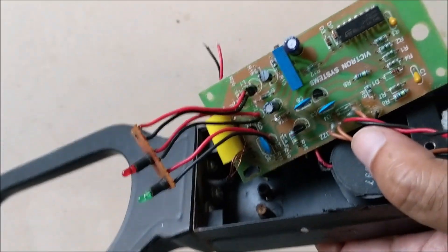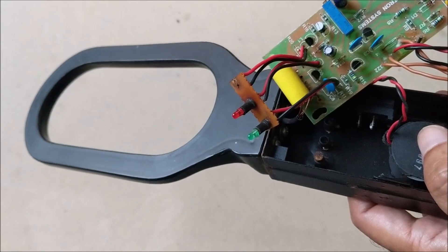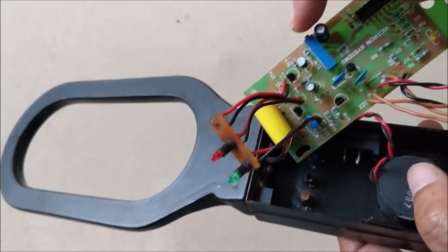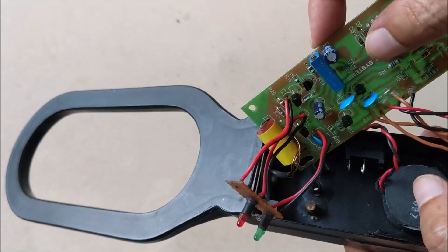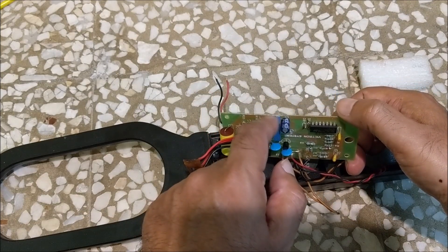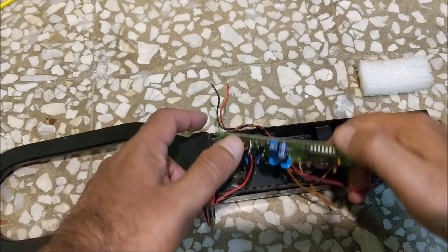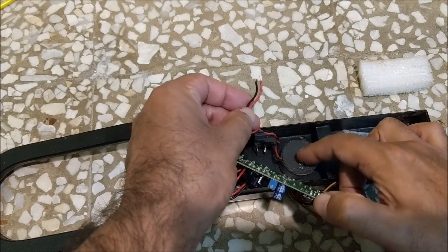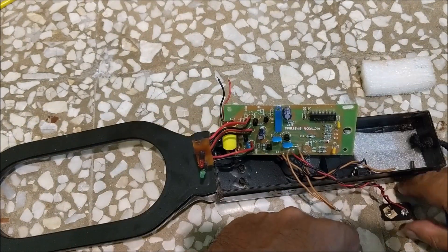All components are good in this metal detector. The problem is in the adjustment of this 1 kilo ohm preset. The value of 1 kilo ohm preset may have changed over time, so let's adjust it. Before adjusting the preset, we remove the buzzer because its sound is too harsh to hear.